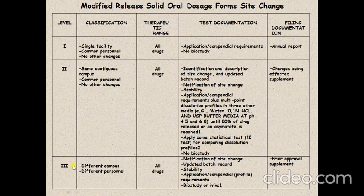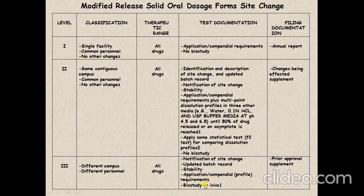Level 3 site change involves different campuses and different personnel for your manufacturing process. Notification of the new site is required, along with an updated batch record, stability study, and application and compendial requirement release test. A bioequivalence study is required to confirm whether your drug is bioequivalent with the previous batch, or you must perform in vivo–in vitro correlation. File this change in the prior approval supplement.